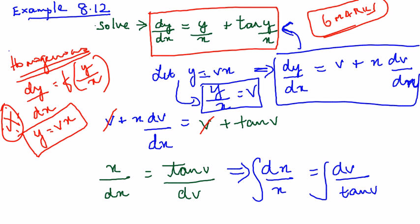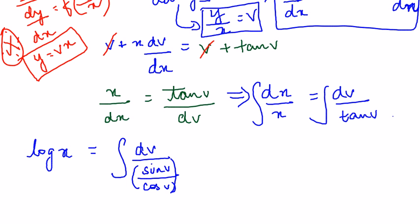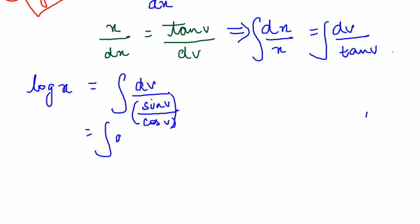So now this can be integrated. What is integration of dx by x or 1 by x? That is log x. But what do you do with 1 by tan v? So the best thing we can do is write this as dv by sin v by cos v. So it's cos v dv by sin v.